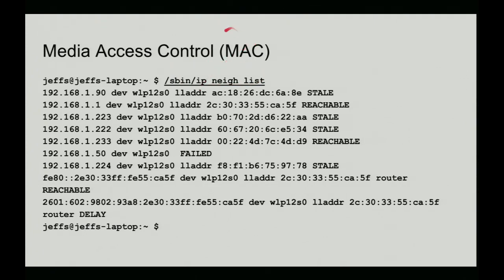The next level up is media access control, and again I'm using the IP command. This tells me what all the neighbors are on my network. It's looking at the ARP table — if you're familiar with 'arp -a -n', this is basically doing the same thing with more keystrokes. This shows me the IP addresses, the MAC addresses, and the state of the link. For example, this is a machine that disappeared a long time ago, but as they say, the network never forgets.